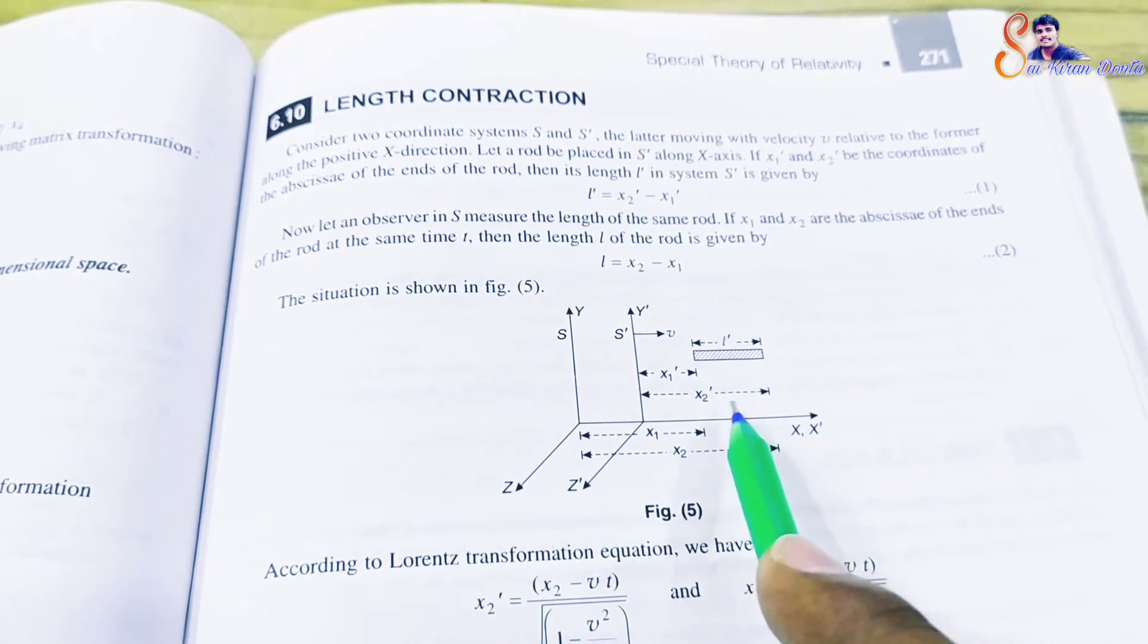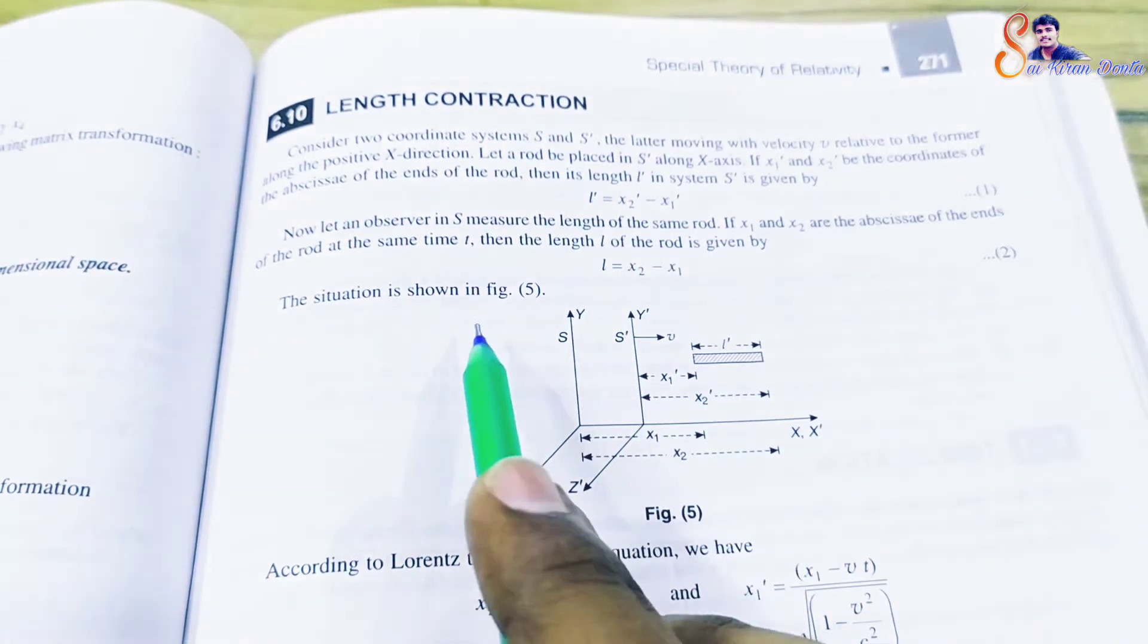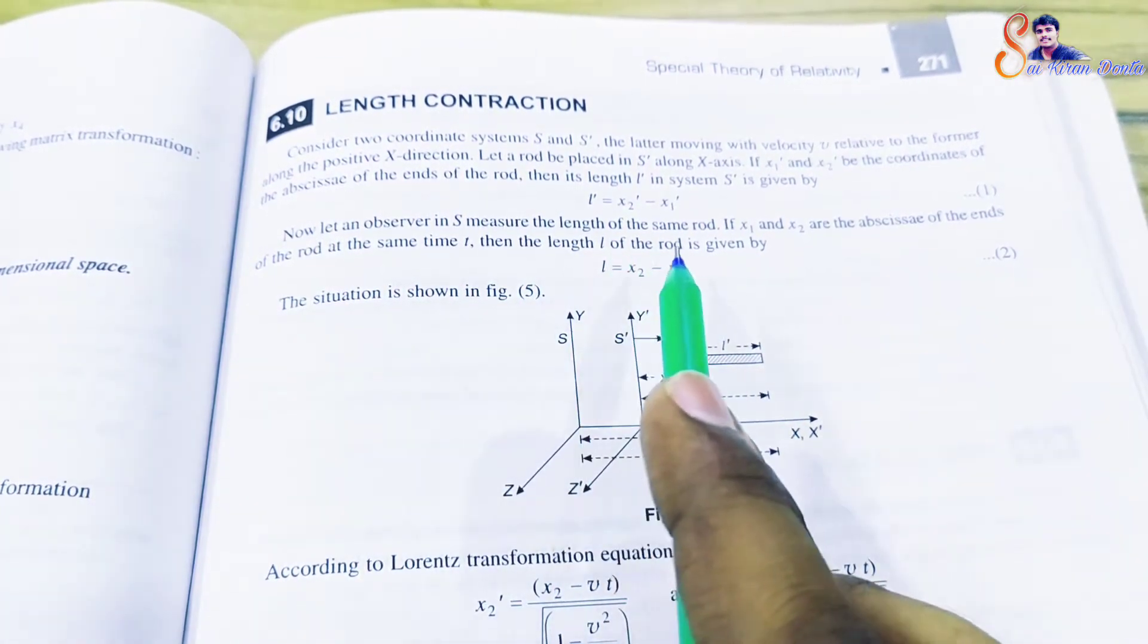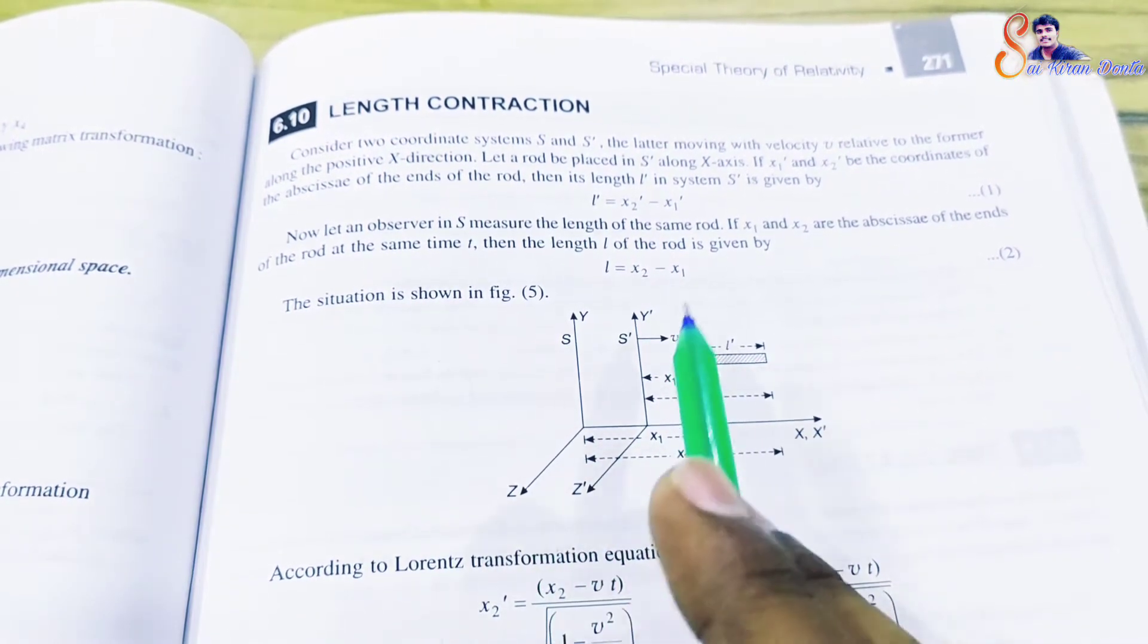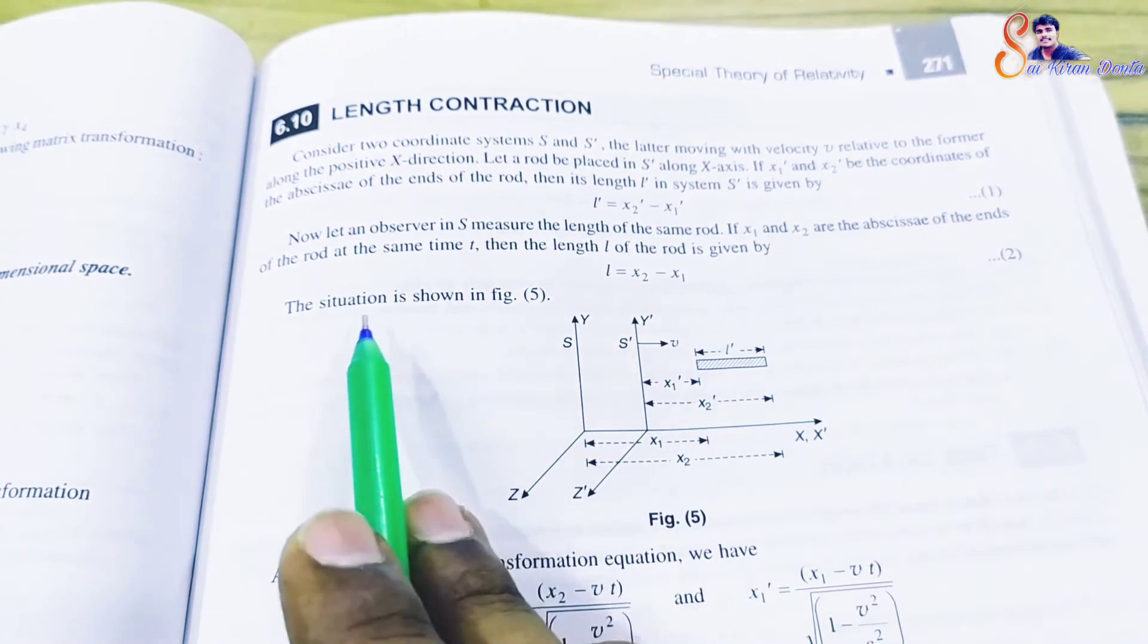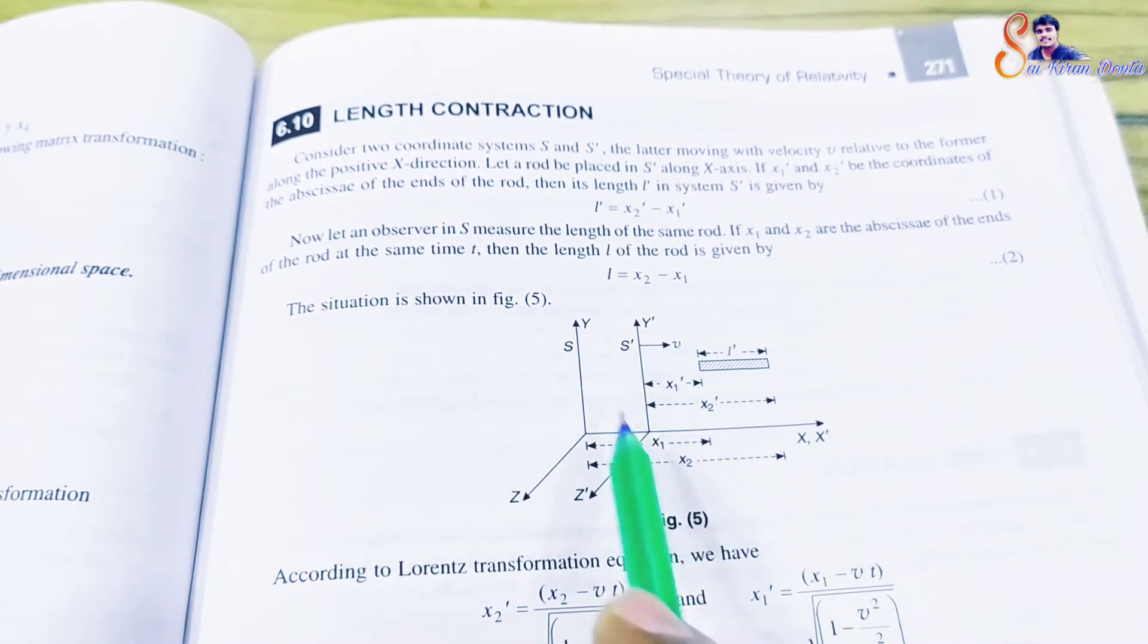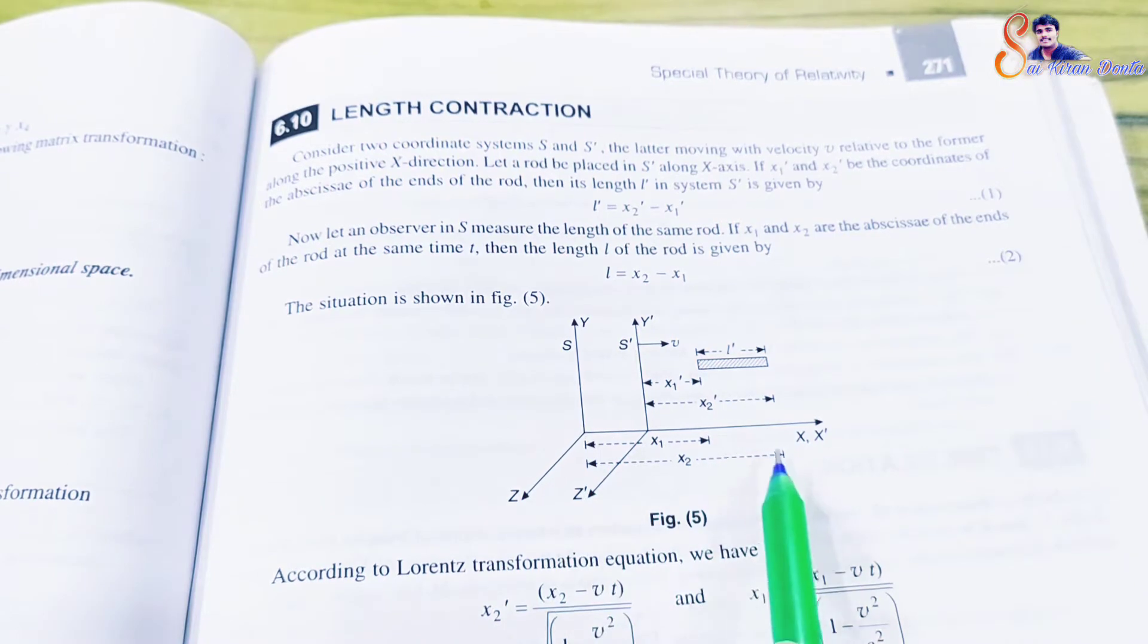Now an observer in S can measure the length of the same rod. If x1 and x2 are the coordinates of the ends of the rod at the same time t, then the length l of the rod is given by l equals x2 minus x1.